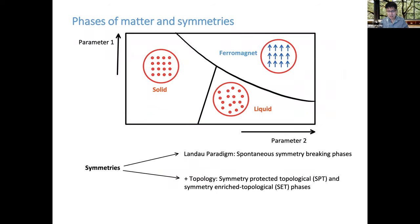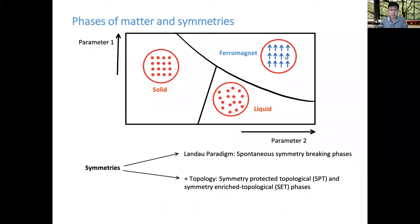As a motivation: in condensed matter, we're interested in studying phases of matter — how different microscopic building blocks, as a collective, give rise to new phases. For example, in some abstract parameter space, as you tune parameter one, there's a solid — a regular pattern of atoms. As you tune some other parameter, say temperature, the solid could melt and become a liquid. And maybe there's another phase transition where a different variable starts to order and you get a ferromagnet.